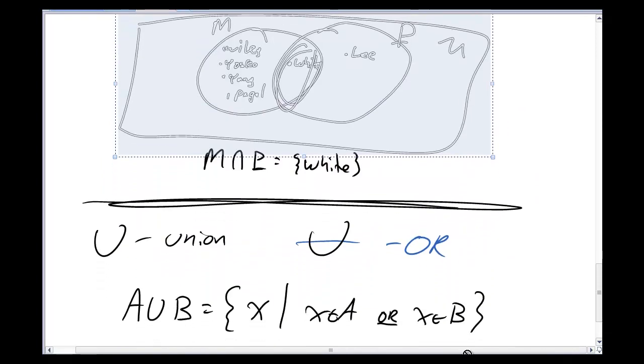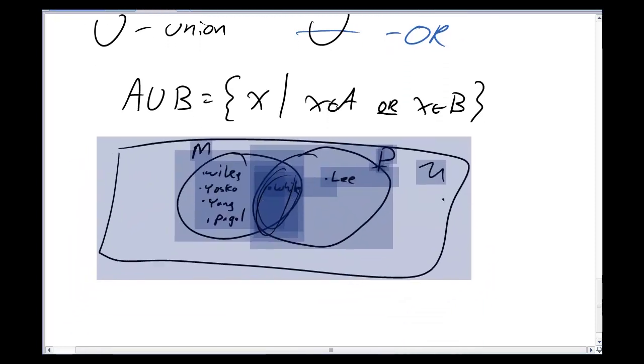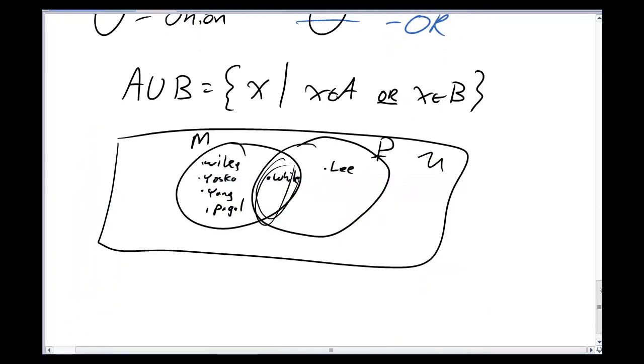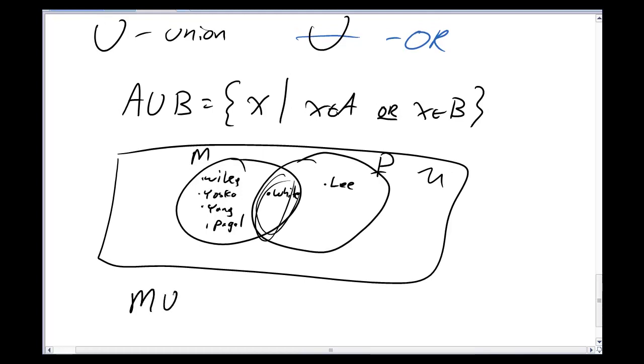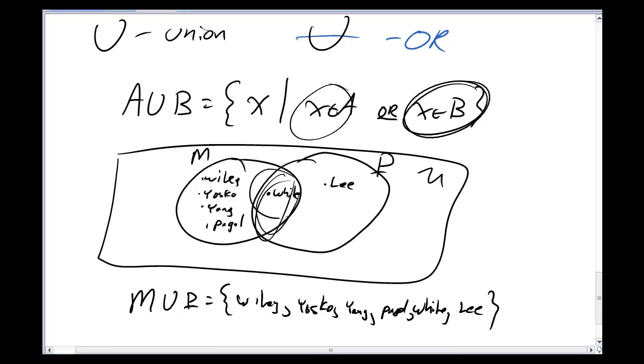Let's go back to our example up here of the physics department. Let's drag this example down here and look at it. I've got it here again. I'm talking about union. Let's talk about math union physics. Well, what does this say? First, I grab all the things that are parts of A. I grab all the things that are parts of math. So, I have Wiley. I've got Yasko. I've got Yang. I've got Poggle. I've got White. Then I grab all the things that are part of the second set, which for us now is P in my specific example. All the people in physics. And that involves Lee.